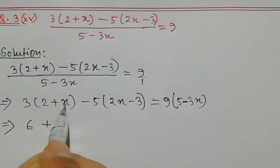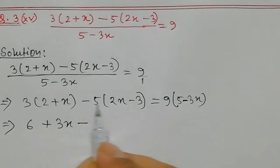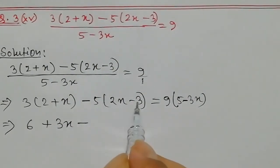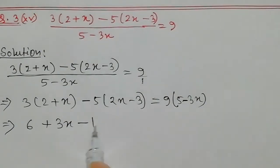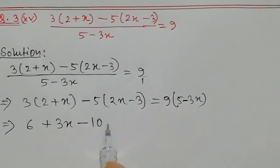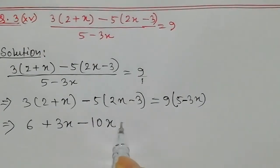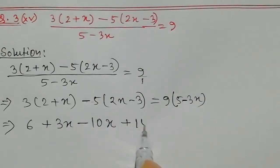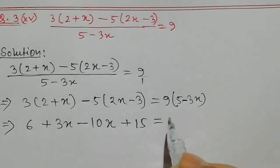Plus 3x minus, bracket, 2 minus 3x, minus 2. Then I have to add 5 to 10x, minus minus plus, minus 3. So again applying the same property.